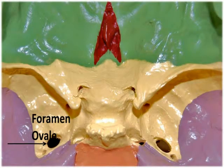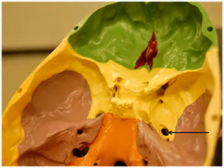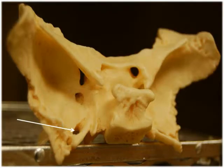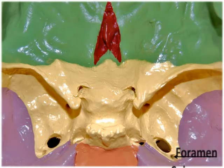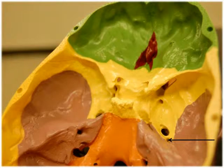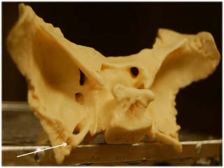The foramen ovale is located towards the posterior of the greater wing. This oval hole has a very distinct shape and should also be used as a landmark to locate the other foramina. It allows passage of the mandibular branch of the trigeminal nerve. Also in the greater wing, just lateral to the foramen ovale, are the smallest of the foramina, called the foramen spinosum. These tiny spiny openings allow passage of blood vessels to the meninges surrounding the central nervous system.